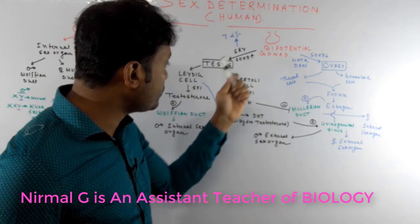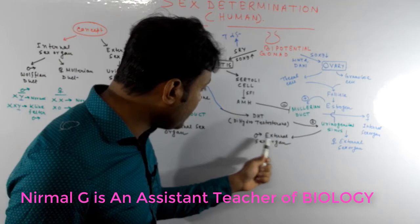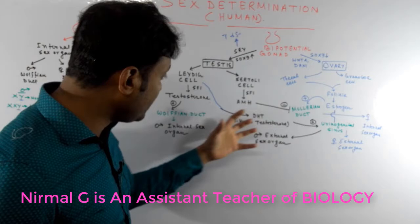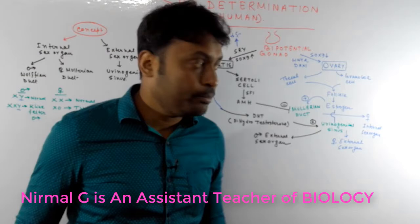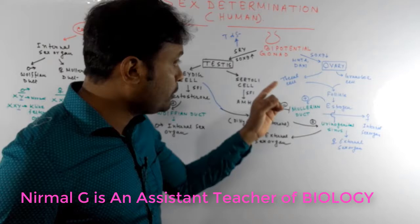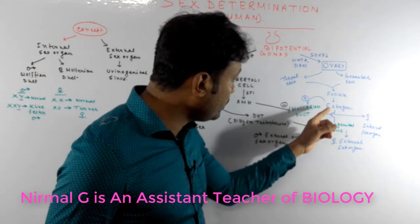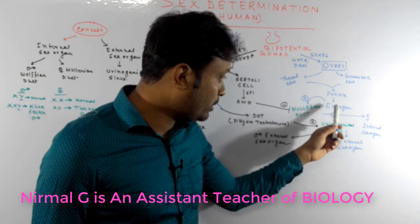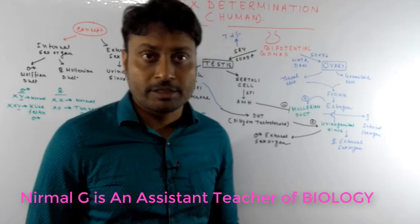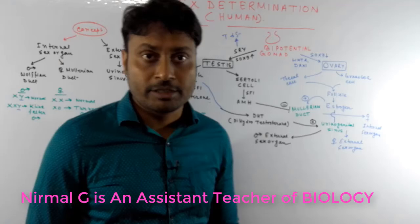In summary: the SRY gene and SOX9 gene are responsible for synthesis of the testes from the bipotential gonad, and male external sex organs develop from the urogenital sinus. I have written male development in black and female development in blue. In females, the SOX9 gene level is low, and WNT4 and DAX1 cause development of the ovary from the bipotential gonad. Estrogen activates the Müllerian duct for development of female internal sex organs, and also acts upon the urogenital sinus for development of female external sex organs. Thank you for watching — if you like my videos please share and subscribe to my channel BioNinval.